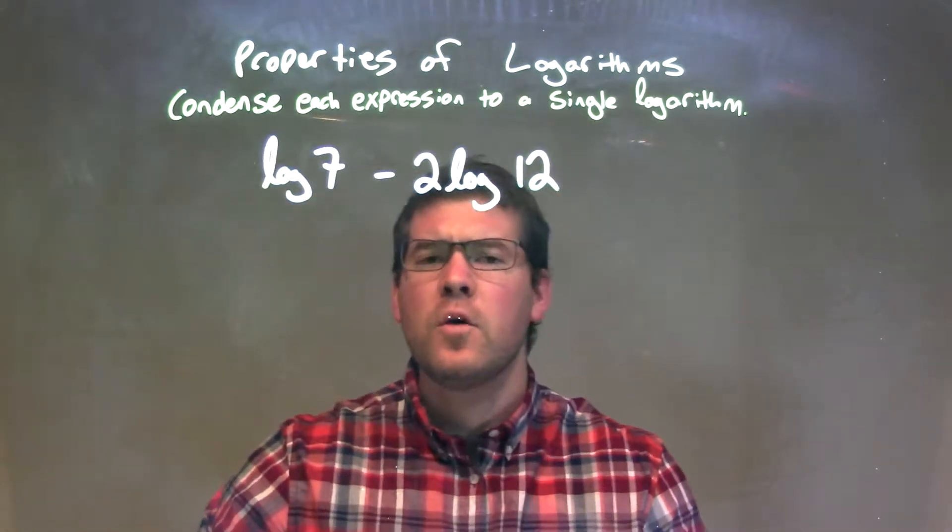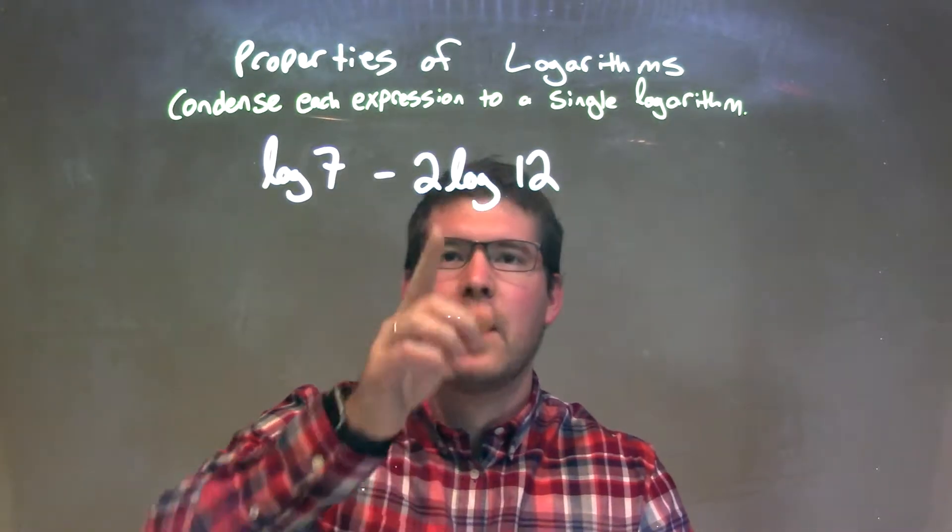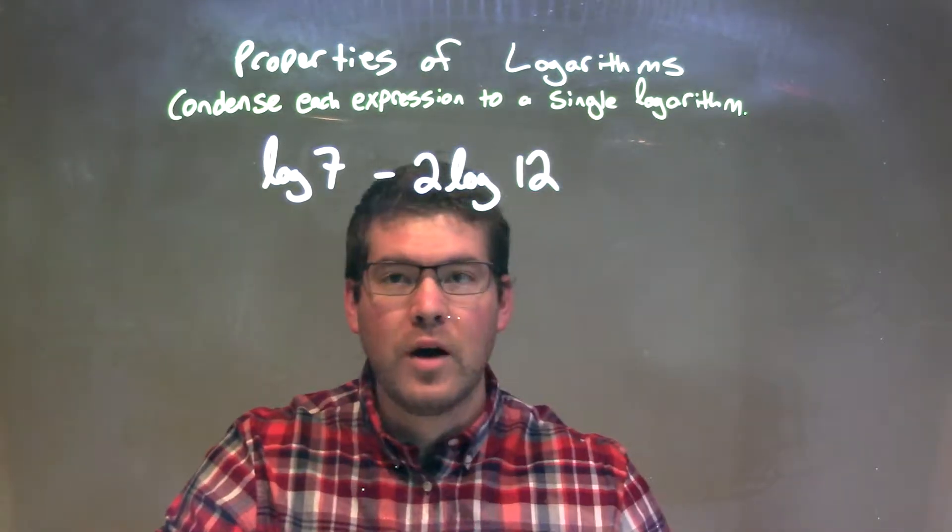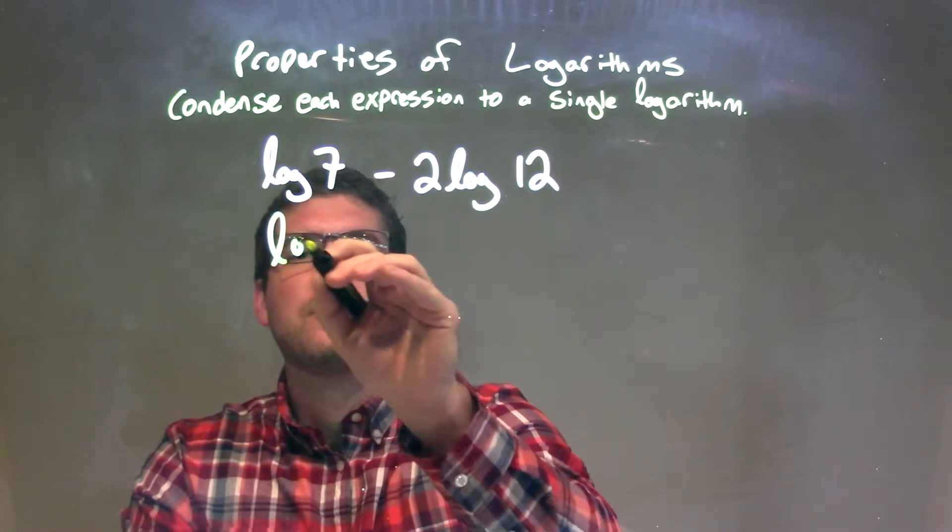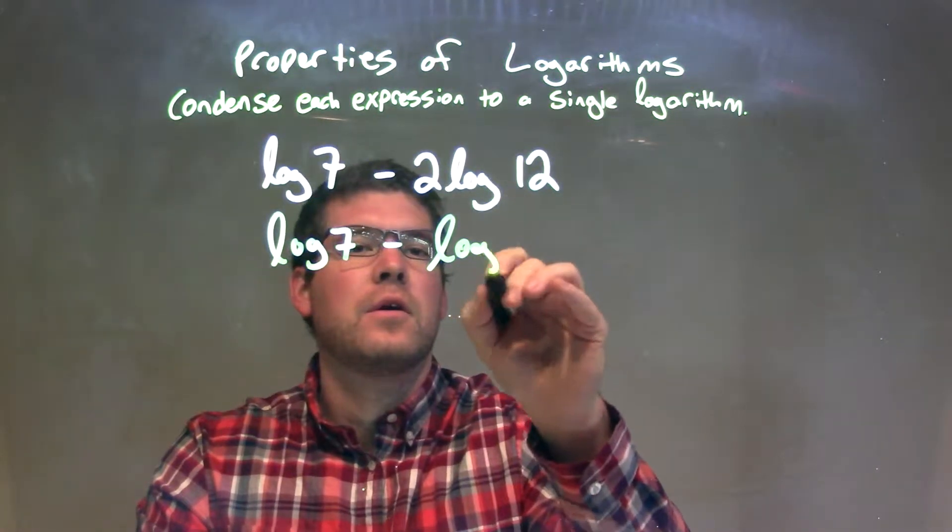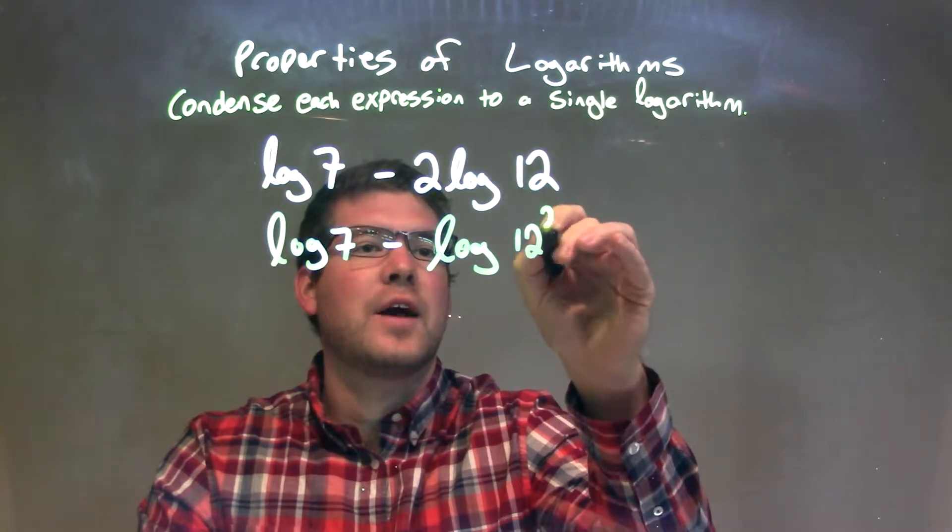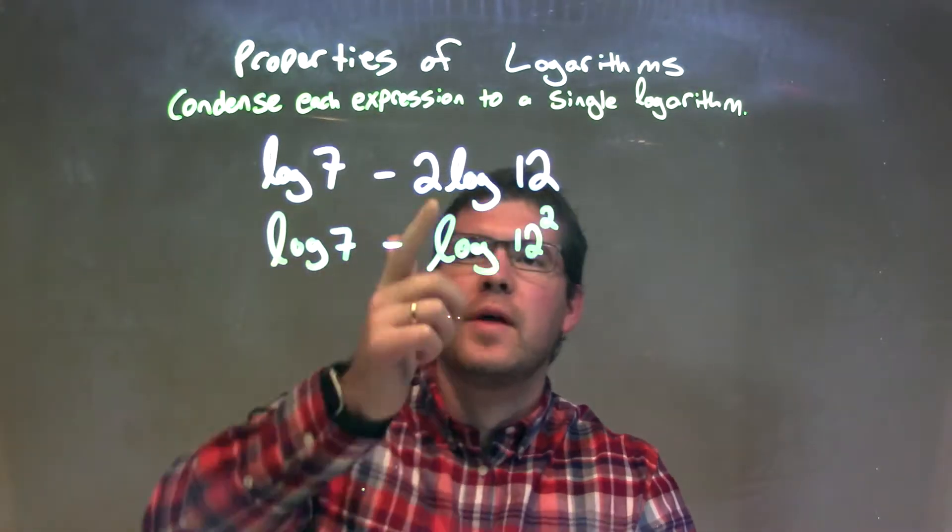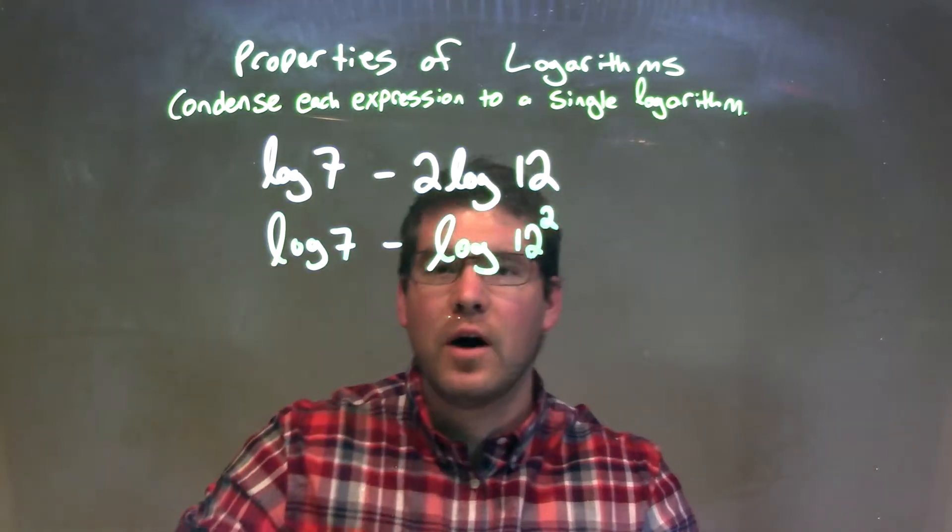Well, first thing I want to do is, that 2 in front of the log of 12, I'm going to bring it to the exponent of the 12. So we have log of 7 minus log of 12 to the second power.